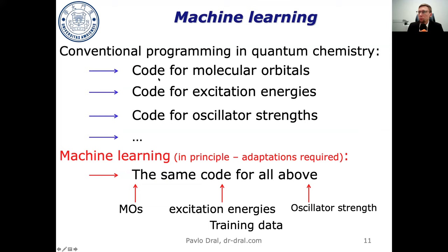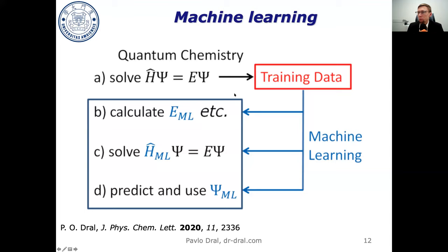Traditional quantum chemistry method development requires developing code, designing mathematical equations, implementing them in computers, and running simulations — lots of human effort. Machine learning is more generic: you can take the same code and feed it training data to predict properties that would otherwise require painstaking first-principles calculations. There are several ways to use ML to improve or augment quantum chemistry.